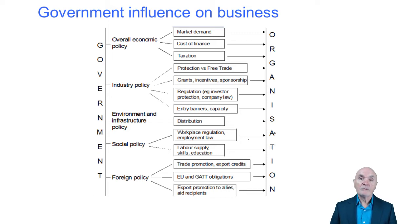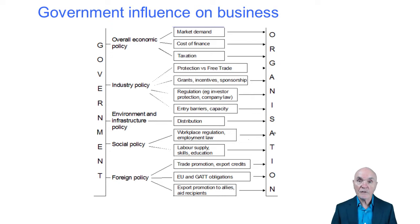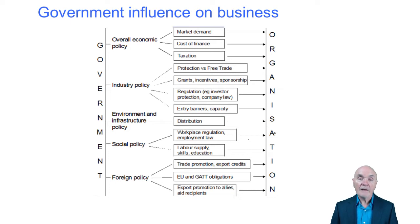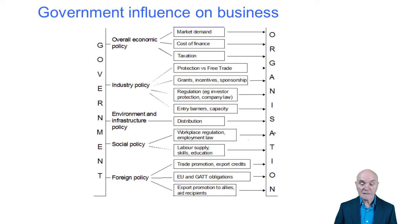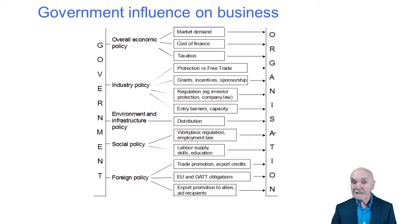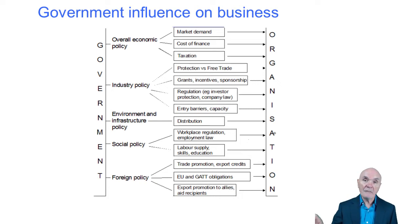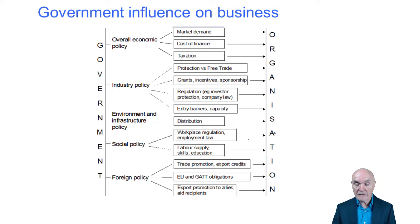Social policy will also look at training provided by government — schools, technical colleges, universities, and maybe subsidies to train staff. Then there is foreign policy: the government can get involved in trade delegations to try to encourage exports, and can provide export guarantees and export credits, so that if a foreign customer doesn't pay, a government insurance scheme will make sure you haven't lost everything.